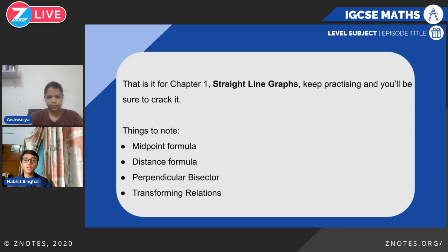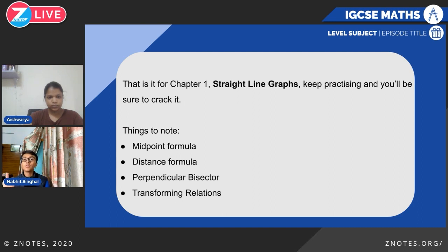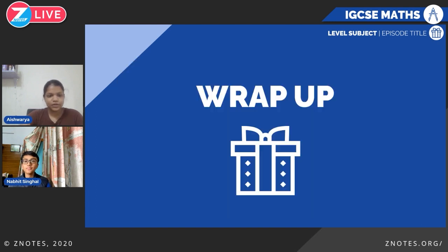That is it for today. We covered straight line graphs, which is a relatively simple topic — keep practicing and you'll be sure to crack it. A few important things to note are the midpoint formula, the distance formula, how to find perpendicular bisectors, and how to transform relations. Thank you so much, Nubit. We hope you now have a better understanding of this topic, and thank you for your time today.